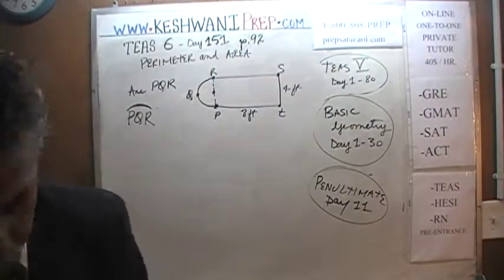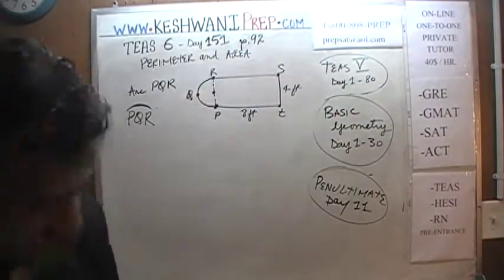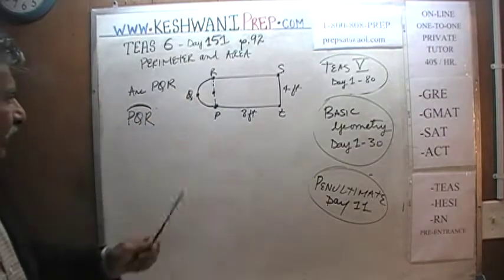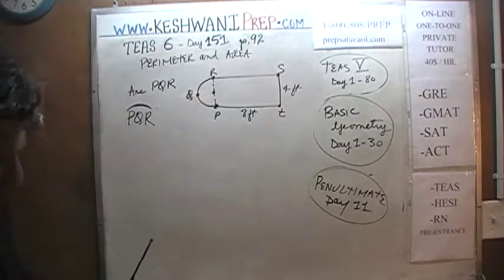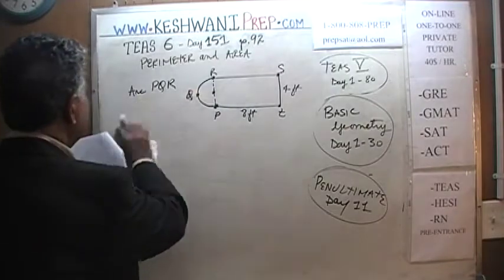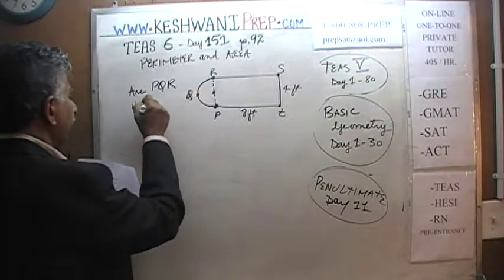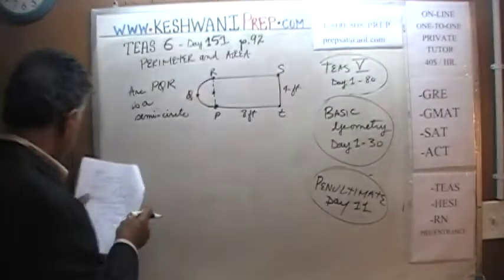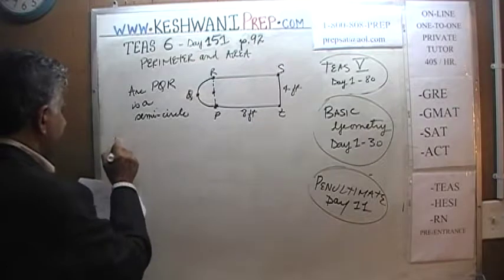And what is it that we are asked to find? We are being asked to figure out the perimeter and the area of this guy, this picture right here. We are told that arc PQR is a semicircle. Now we know it is a semicircle. Let's find out the perimeter first.